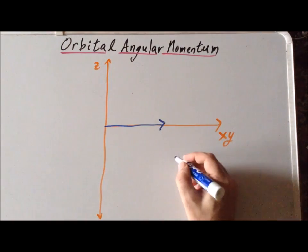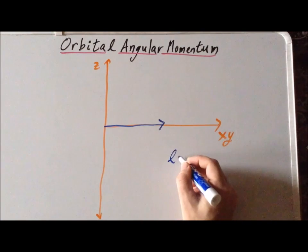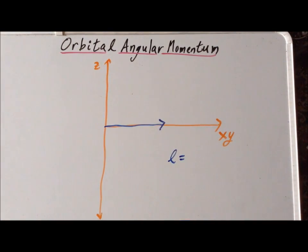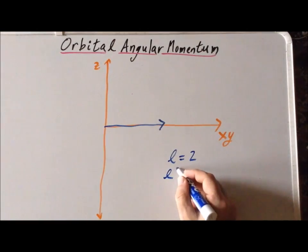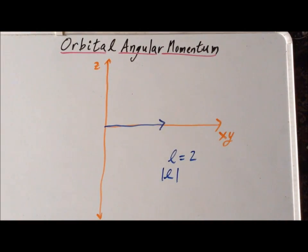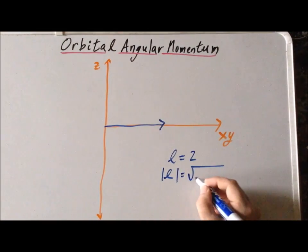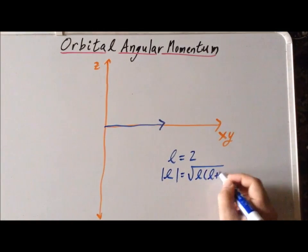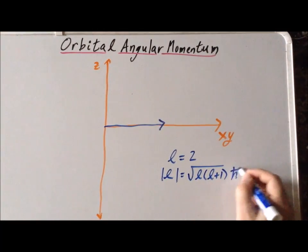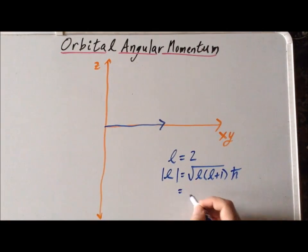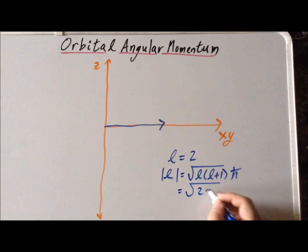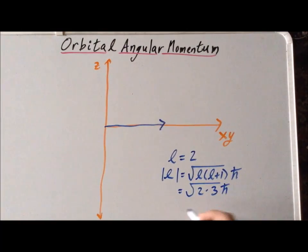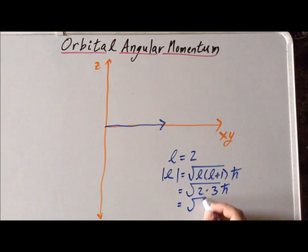Let us assume that we have an orbital angular momentum that corresponds to the orbital angular momentum quantum number l being equal to 2. If this is true, the magnitude of the orbital angular momentum, which we put in sort of absolute value brackets, is equal to the square root of the quantity l times (l+1) times h-bar. In our particular case, that gives us the square root of 2 times 3 times h-bar, which is the square root of 6 times h-bar.